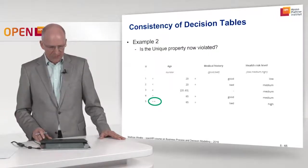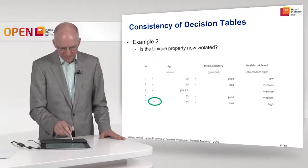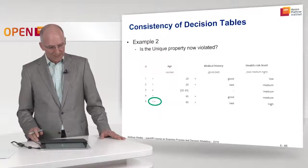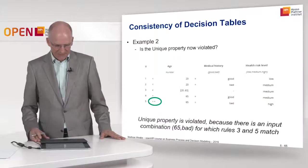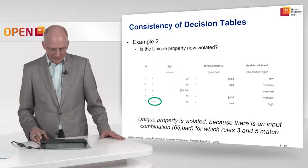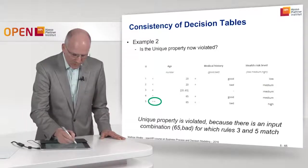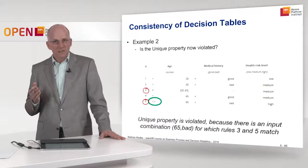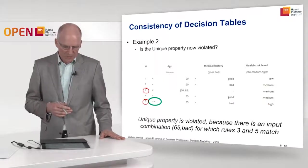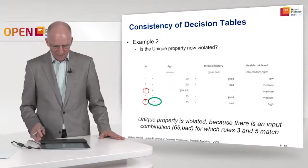Now we have a slight change to this table, indicated by a green symbol. Rule 5 has been changed: it's not only larger than 65 but now larger or equal to 65. What happens here is that the unique property is violated. Why? Because there is an input combination for which two rules match — namely rules 3 and 5. Unique states that there must be at most one row for each input combination. Here, the input combination 65, bad matches both rules 3 and 5, which is forbidden.